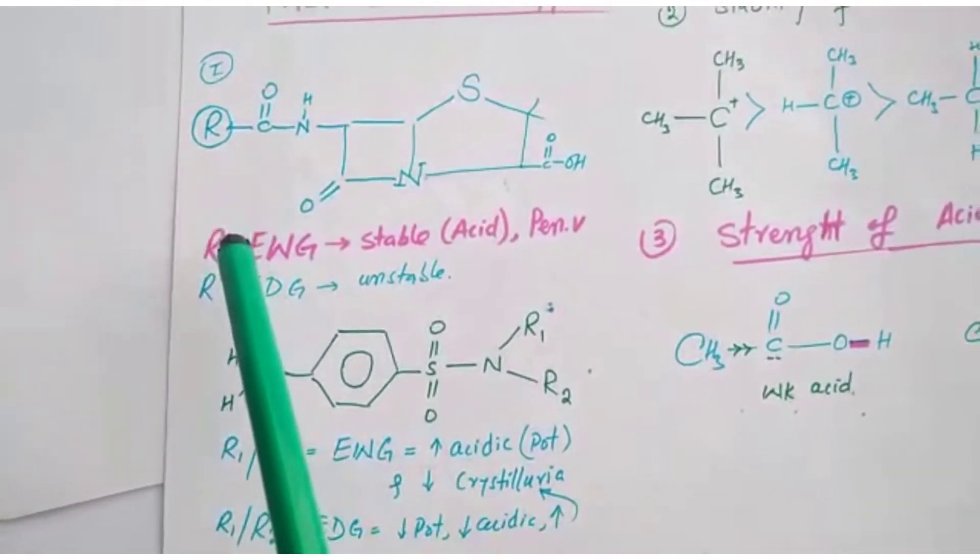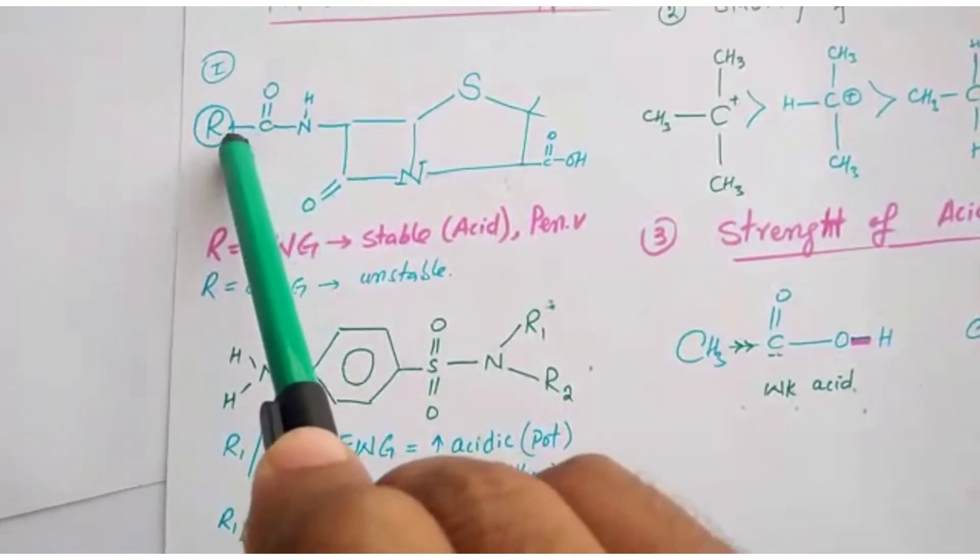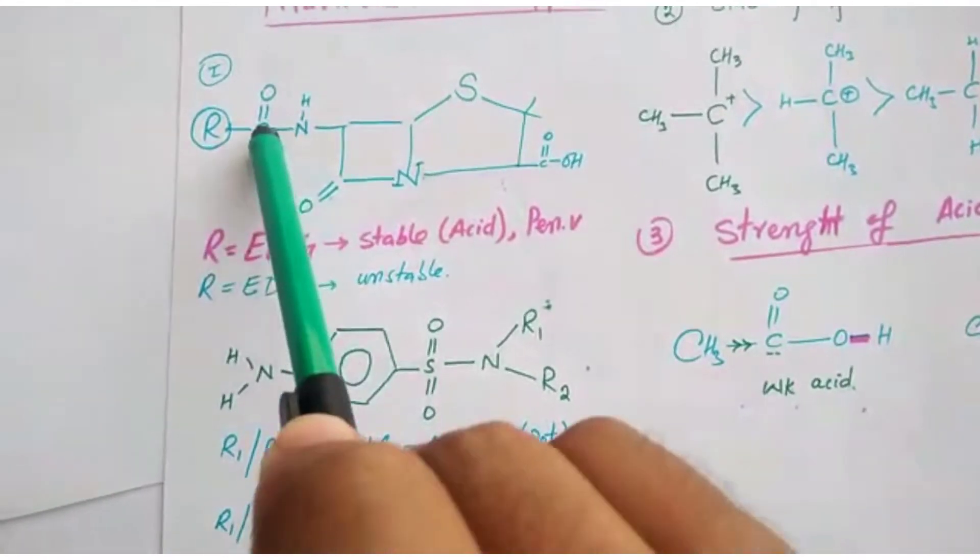If R group is electron withdrawing group, if this is electron withdrawing, this whole penicillin will be stable.